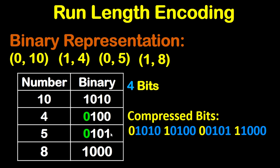Now to get the final result: we have 0 for the first group, so we write 0, then the binary of 10 which is 1010. Next, we have 1 for the second group, so we write 1, then the binary of 4 which is 0100. Again 0 for the third group, so we write 0, then the binary of 5 which is 0101. Finally 1 for the fourth group, so we write 1, then the binary of 8 which is 1000. So this is the final result.